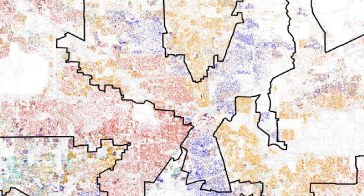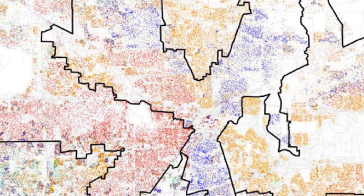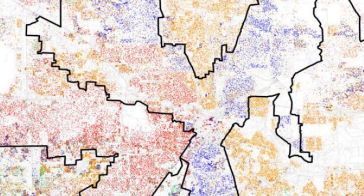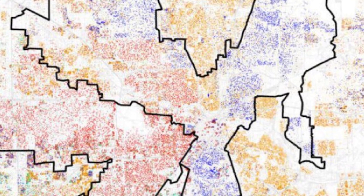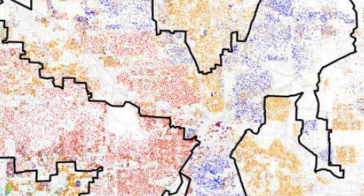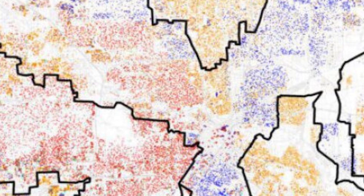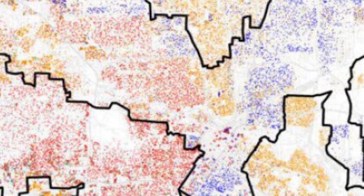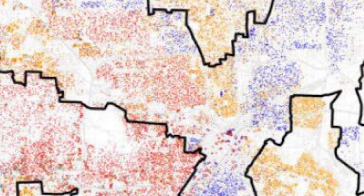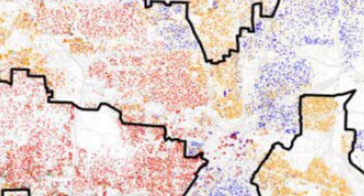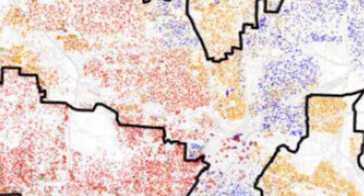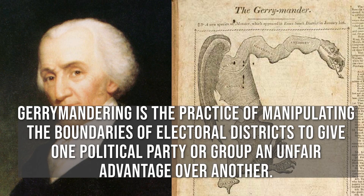The significance of the Shaw v. Reno decision cannot be overstated. Prior to this case, courts had generally been deferential to state legislators when it came to redistricting, assuming that they had broad discretion to draw districts as they saw fit. However, the Shaw decision signaled a new willingness by the court to scrutinize redistricting plans for evidence of racial gerrymandering.